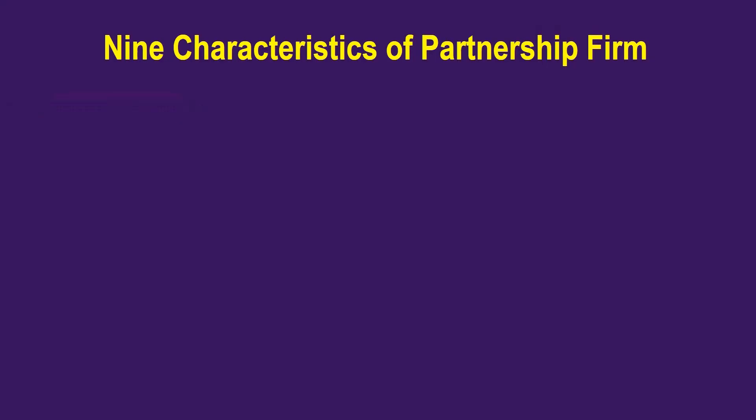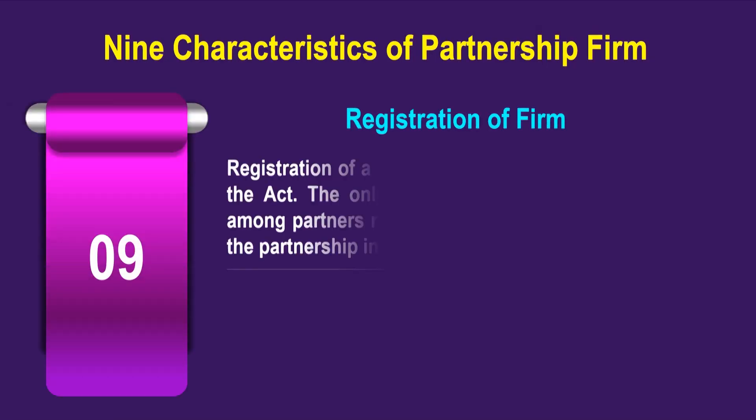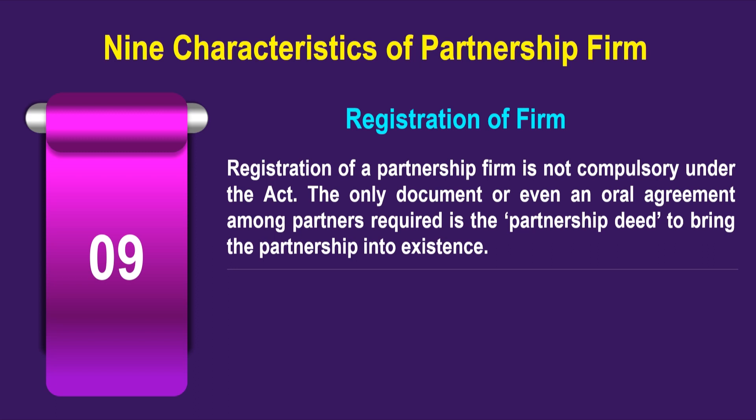The ninth characteristic is registration of firms. Registration of a partnership firm is not compulsory under the act. The only document required is the partnership deed to bring the partnership into existence. So these are the 9 characteristics of the partnership firm. With this we conclude this video — for details you can refer to the reading material. Thank you so much.